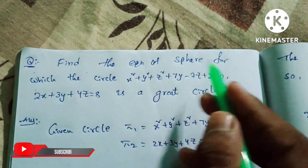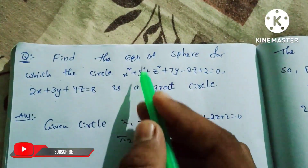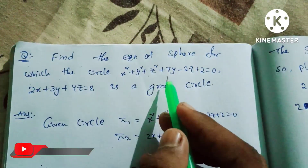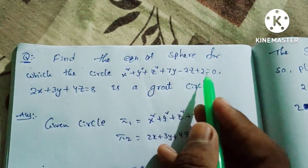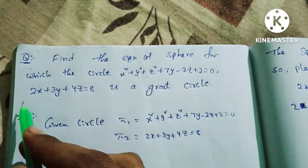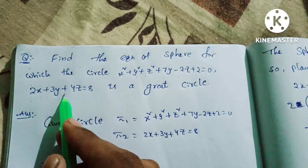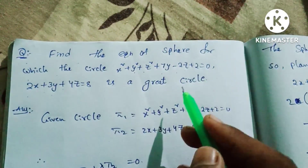Find the equation of the sphere for which the circle x² + y² + z² + 7y - 2z + 2 = 0, comma 2x + 3y + 4z = 8 is a great circle.